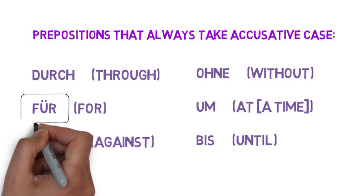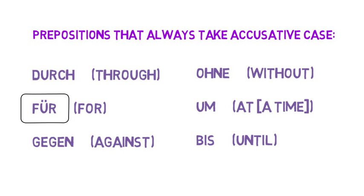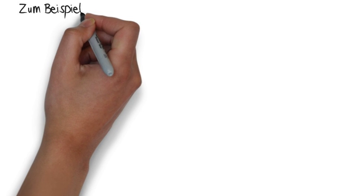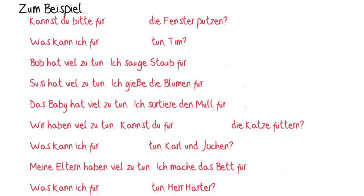We'll be focusing mostly on FÜR for now, but please feel free to learn the others whenever you feel ready. Now let's take a look at a couple of examples that use the preposition FÜR. We've left out the pronouns in the sentences for now. Notice that each blank comes after the word FÜR, which means that each pronoun will have to be in the accusative case. Pause the video now if you think you can figure out what should go in the blanks.